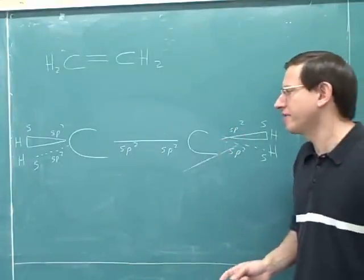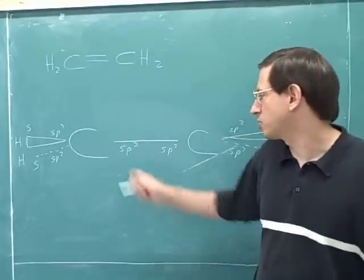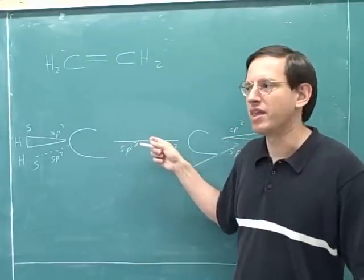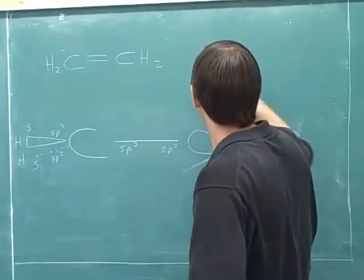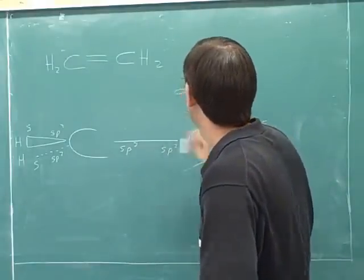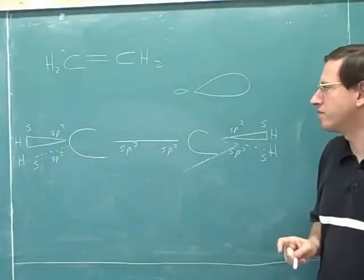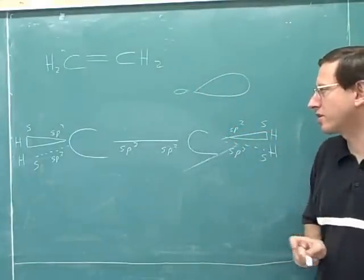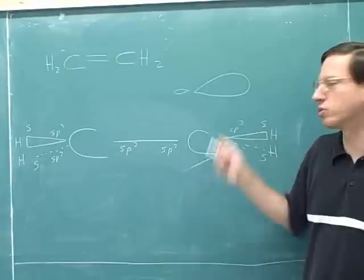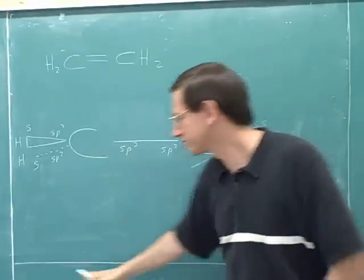Now, I haven't actually drawn the sp2 orbitals. Of course, sp2 orbitals are not straight lines — they actually look more like a rounded lobe shape. But in order to make the picture clearer, I'm not actually drawing the sp2 orbitals; I'm just labeling where the sp2 orbitals are.